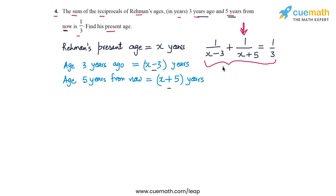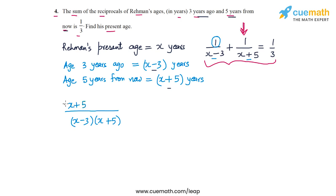Now let's solve this equation. We take the LCM of the denominators x - 3 and x + 5 to combine the two terms on the left-hand side. We get (x + 5 + x - 3) over (x - 3)(x + 5), which equals 1/3 on the right side.